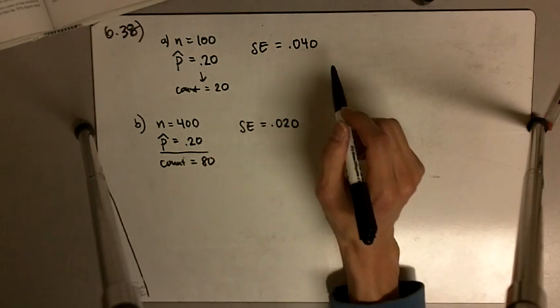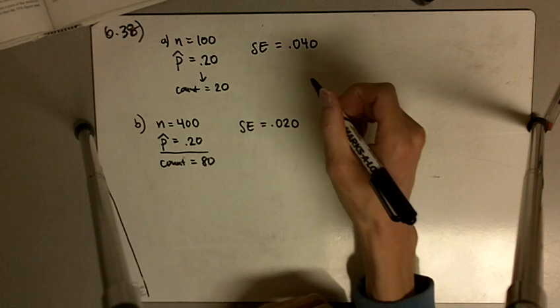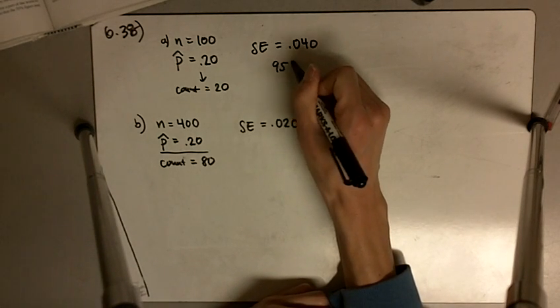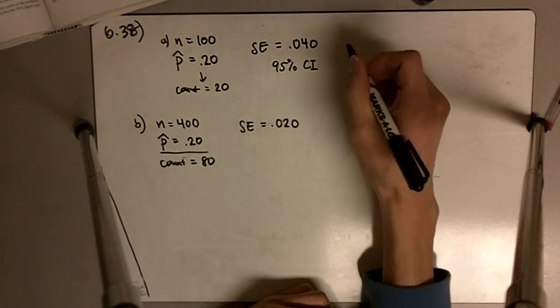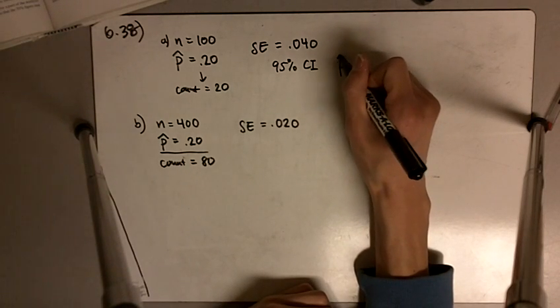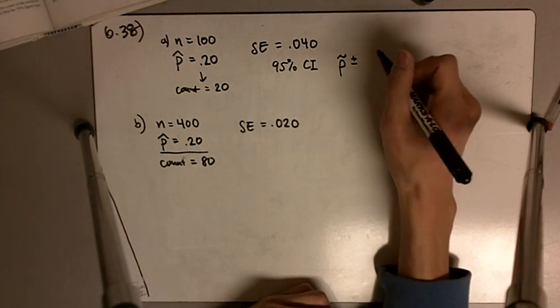So in this case the confidence interval, 95% confidence interval is given by P̂ plus or minus our 1.96 times the standard error of P̂.